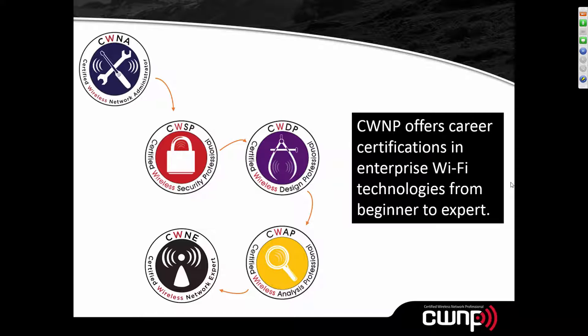At the professional level, CWSP focuses on security — implementing wireless networks securely and understanding security risks. CWDP focuses on design, planning, and implementing a successful wireless network. CWAP focuses on analysis and troubleshooting. The elite CWNE requires passing all four exams — CWNA, CWSP, CWDP, and CWAP — plus three or more years of industry experience, followed by an application reviewed by the CWNE Board of Advisors, who are themselves six CWNEs.